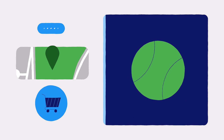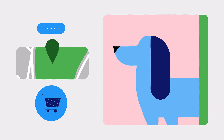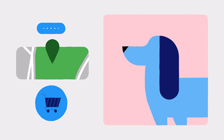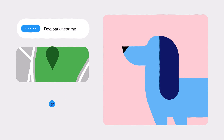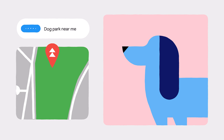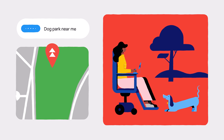Whether you're making an online purchase or scrolling through your camera roll, Voice Access is designed so that you can speak a variety of commands and verbally tap on any text or image you see on the screen.